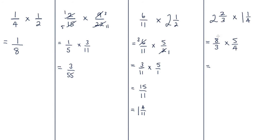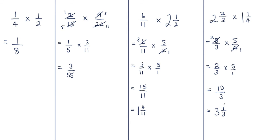Checking for cancellation, eight and four share a common factor of four: four goes into eight twice and four goes into four once, giving two thirds multiplied by five over one. Two times five is ten and three times one is three, so ten over three. Converting to a mixed number: three goes into ten three times — three threes are nine — with one third remaining. Final answer: three and one third.